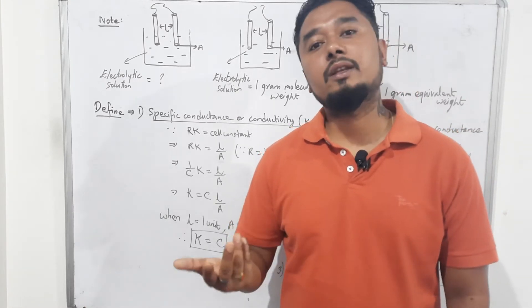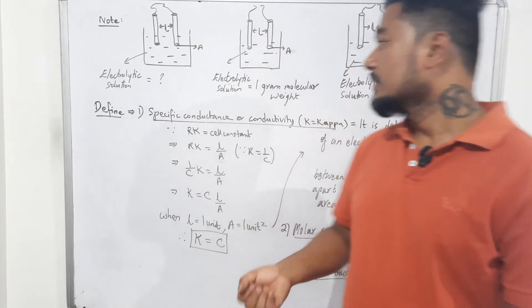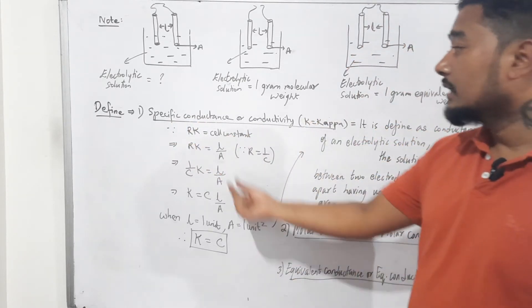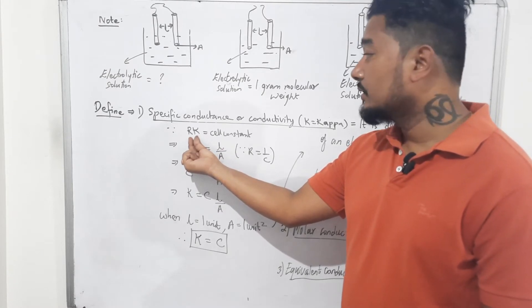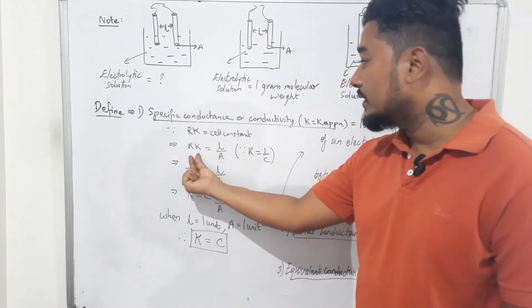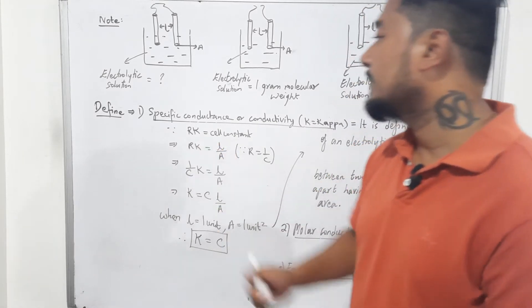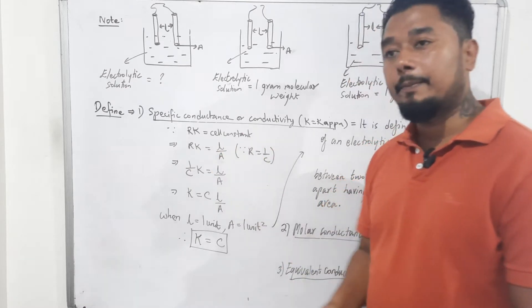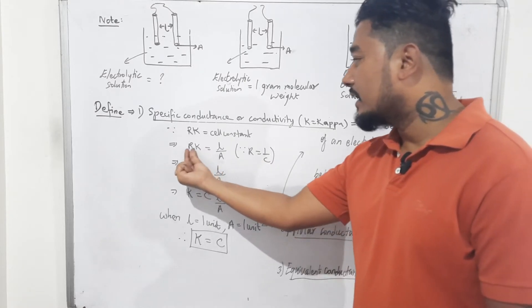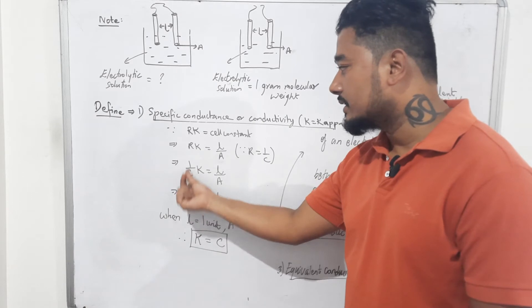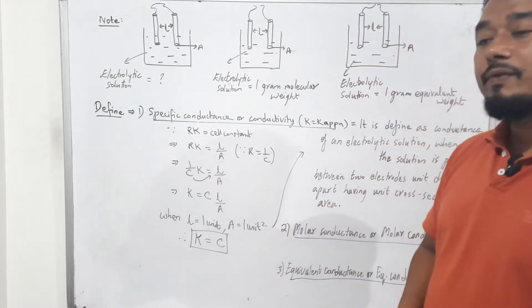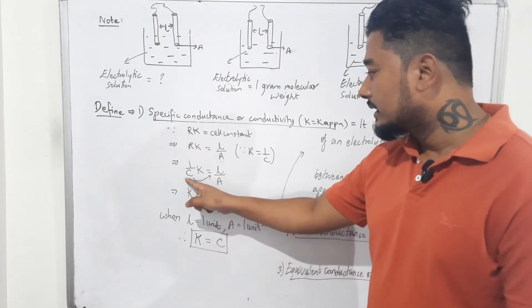You can write definitions in your own sentences, provided you know the derivation. To find the definition of specific conductance (κ), recall from last class: cell constant = R·κ and cell constant = L/A. So R·κ = L/A. Since resistance is the opposite of conductance, I replace R with 1/C, giving κ = C · (L/A).